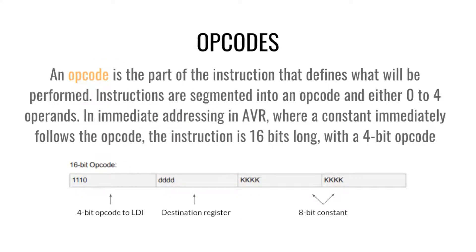Earlier we saw an instruction where we moved into register 5 the number 25 — that whole thing is called an opcode. If you broke it down into binary format it would look something like a 16-bit opcode. We have 1110, which stands for the MOV or LDI or LDD — whatever the mnemonic is. Then DDDD references the four bits meant for the destination register — in our case register 5 or register 7. The eight bits at the end are reserved for the constant, so 25 hexadecimal: two takes four bits and five takes four bits, giving eight bits total. This is a 16-bit opcode segmented into four parts; you could also have two, three, or even one part.